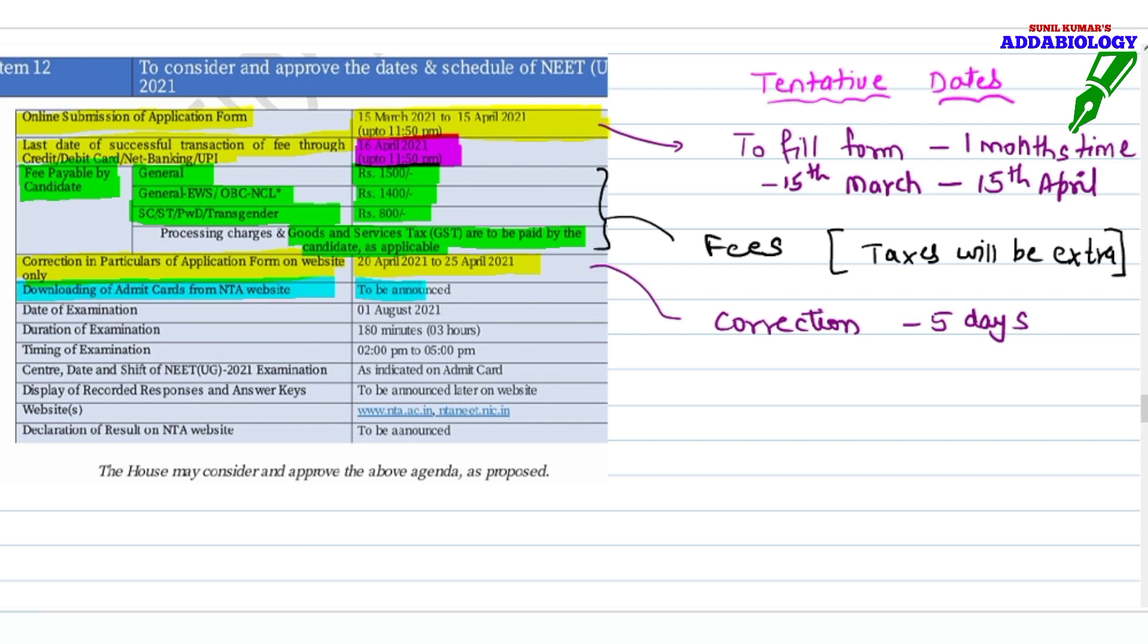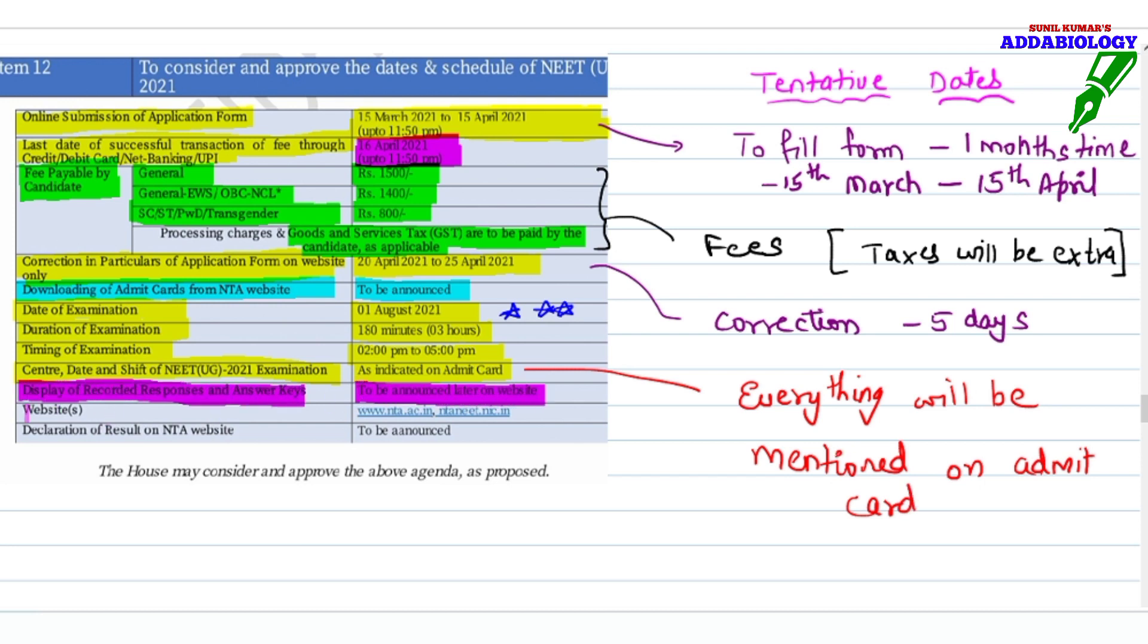The downloading of admit card is not yet announced. The date of examination is official - 1st August 2021, most important date to keep in mind. Duration of exam will be 180 minutes, that is 3 hours. The timing will be 2 to 5 pm. Center and everything will be mentioned on your admit card. The recorded responses will be displayed later on the NTA website and finally the results will be announced.